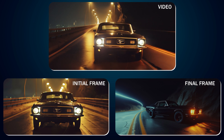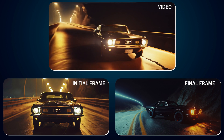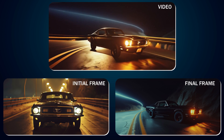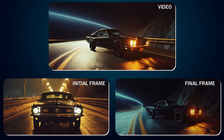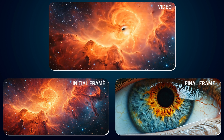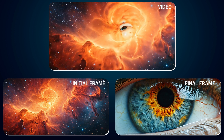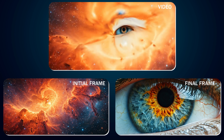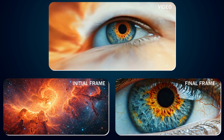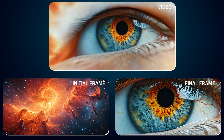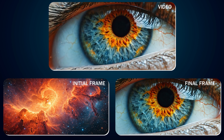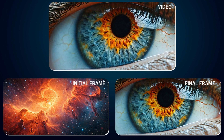You can also create a transition video of a vintage Ford Mustang idling on a nighttime bridge where the straight bridge gradually twists into a winding mountain road. Or a vast fiery nebula fills the frame, its swirling orange and red gases punctuated by distant stars, and as the scene evolves, the cosmic clouds begin to condense and twist, forming intricate patterns reminiscent of an iris.